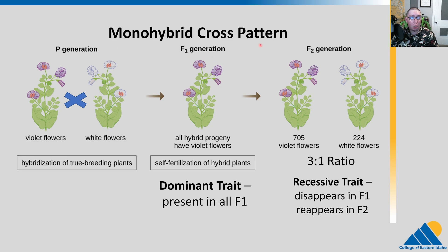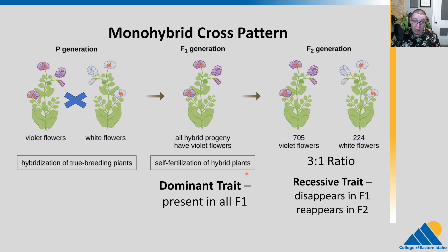Here's a visual representation of the monohybrid cross. He started with a true breeding purple flower and a true breeding white flower — these were the parents. He crossed them, giving us the F1 generation. Mendel found that in the F1 generation, one of the flower colors was always present — he called this the dominant version. In this case, it is the purple flower. All of the F1 showed the dominant trait. When he selfed these, he looked at the F2 generation and there he saw that the recessive trait — the one that had disappeared — reappeared in the F2. There was a three to one ratio: for every three dominant, there was one recessive in the F2 generation.